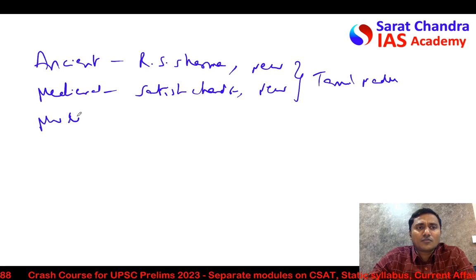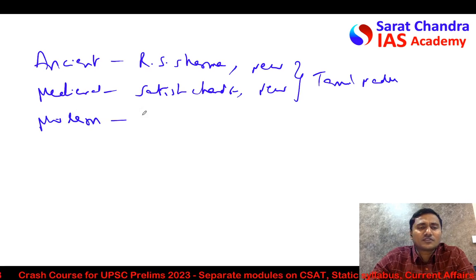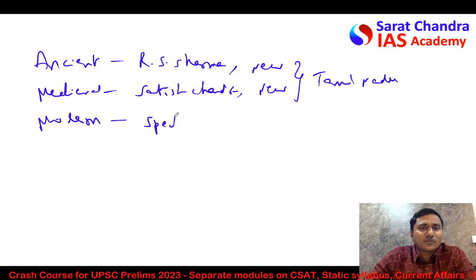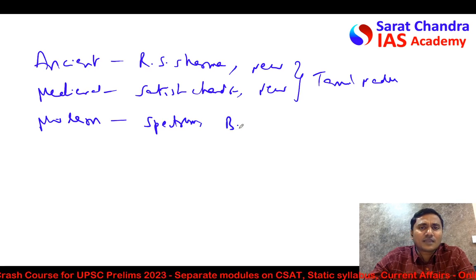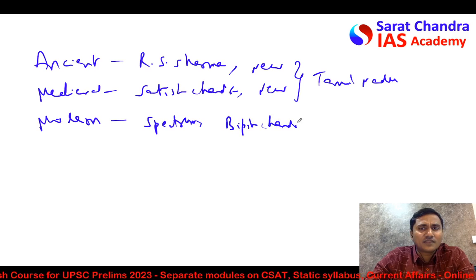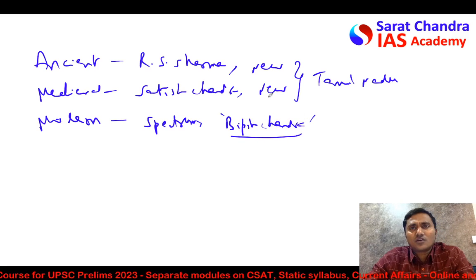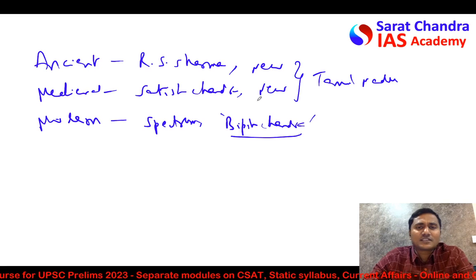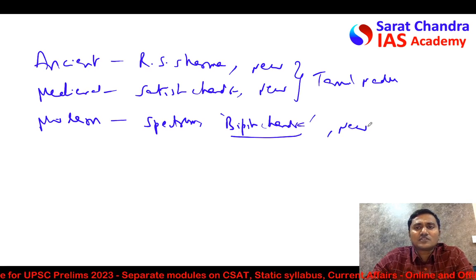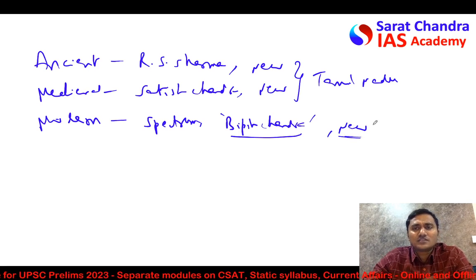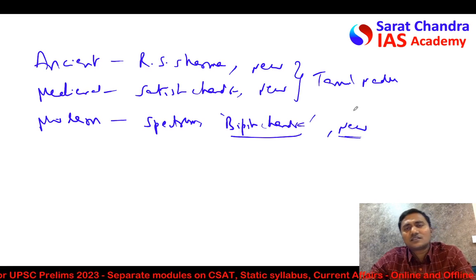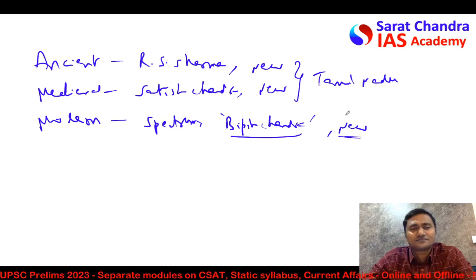For modern history, Spectrum is widely followed by most candidates. Some candidates follow Bipin Chandra, which is the old NCERT — either Modern Indian History or India's Struggle for Independence; both are good textbooks and are enough. Even the new NCERT is also good — the 8th class NCERTs as well as the 12th class NCERT.